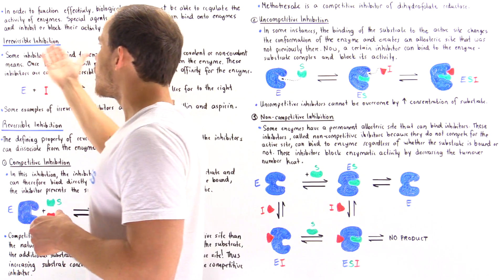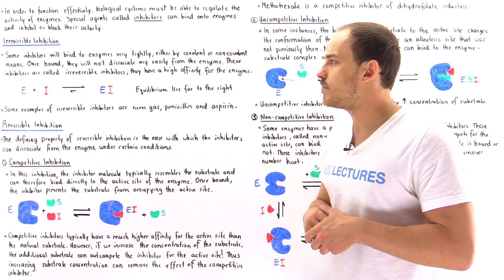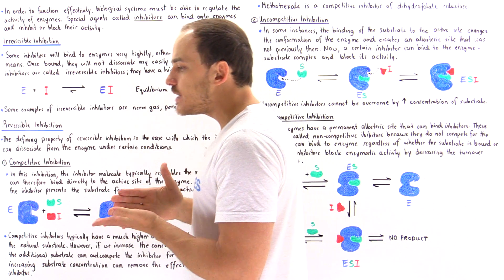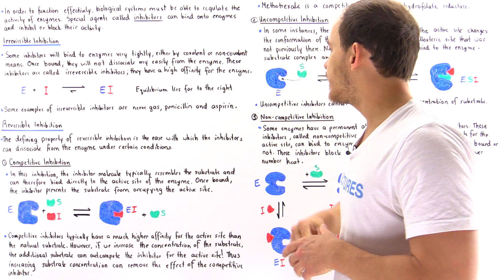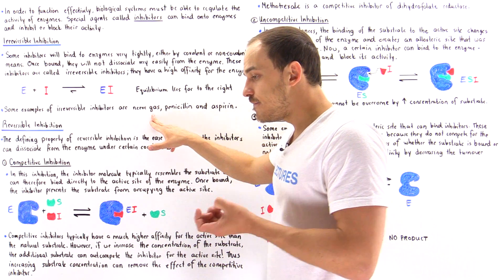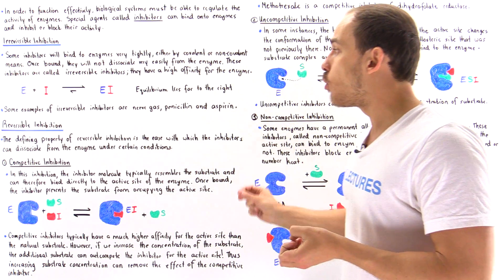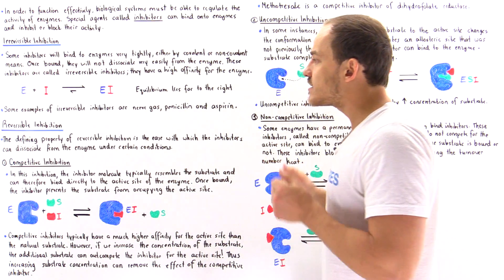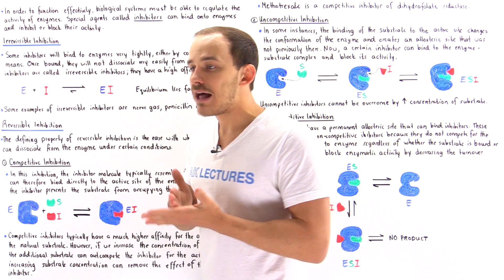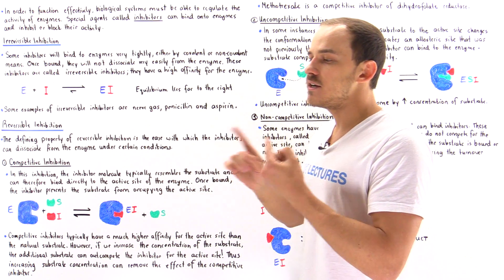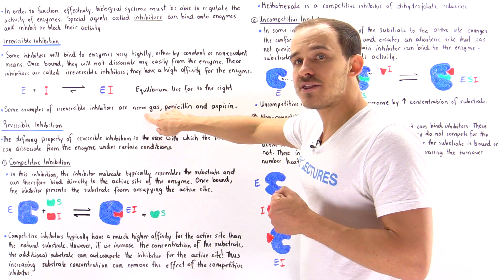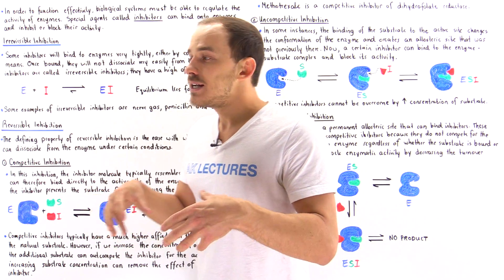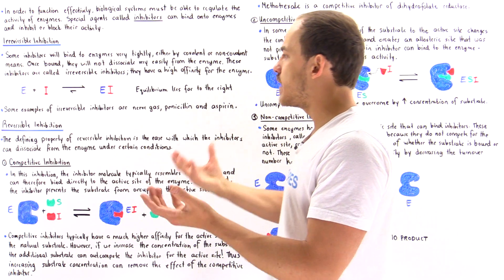There are many different examples of irreversible inhibitors. Three examples are: nerve gas, penicillin, and aspirin. Nerve gas is a very dangerous, very potent irreversible inhibitor that forms covalent bonds. It binds onto a special enzyme found inside the nervous system known as acetylcholinesterase, which breaks down the neurotransmitter acetylcholine used to communicate between nerve cells. By binding onto acetylcholinesterase, it inhibits that enzyme from breaking down that neurotransmitter, which essentially leads to the breakdown of the nervous system and death.